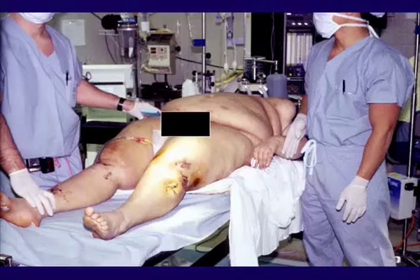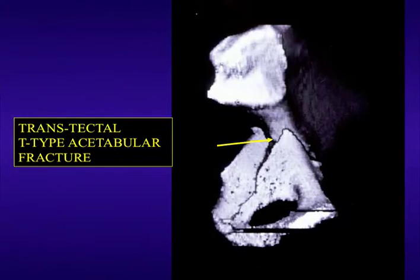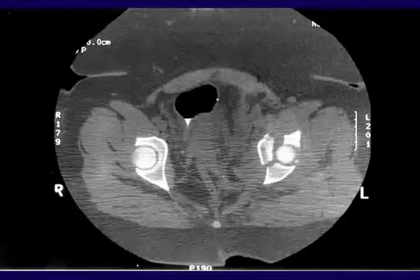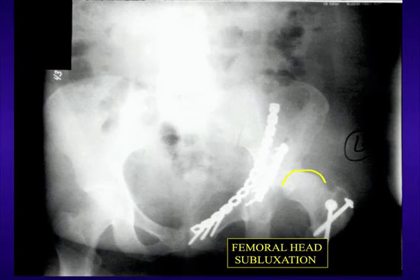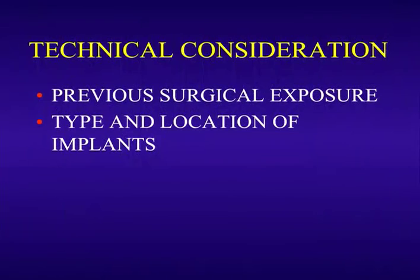Another quick case — an elderly obese patient. Obesity really matters intraoperatively; these are grueling operations. We had a comminuted transtectal fracture, got a good reduction, but it went on to sublux, dislocate, and develop arthritis. Again, the out is a hip arthroplasty, and there it is.